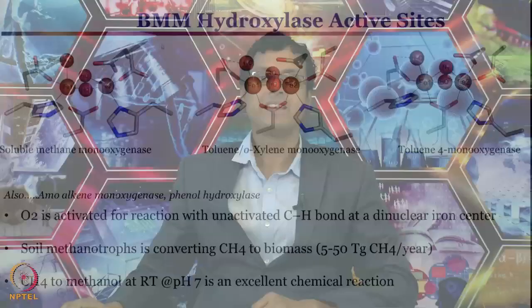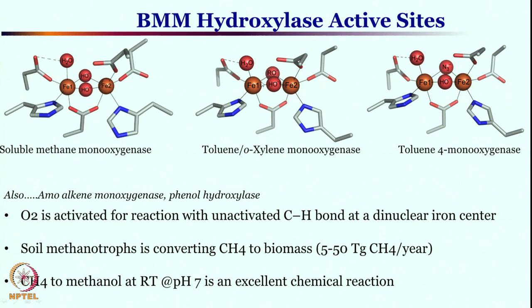Hello, welcome back to Metals in Biology. We will continue discussing Methane Monooxygenase — what a fantastic enzyme. This is a class of the bacterial multi-component monooxygenase executing hydroxylase activity. The soluble methane monooxygenase converts methane into methanol, with two iron centers bridged by two hydroxy units, histidine-histidine-carboxylate linkage, additional carboxylates in mono coordination, and a water molecule — completely unsymmetrical sites with respect to the two iron centers.